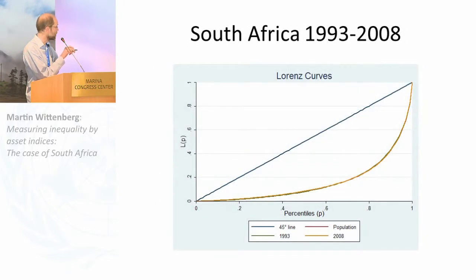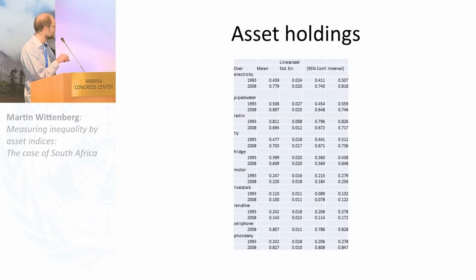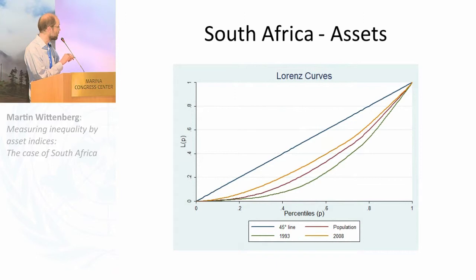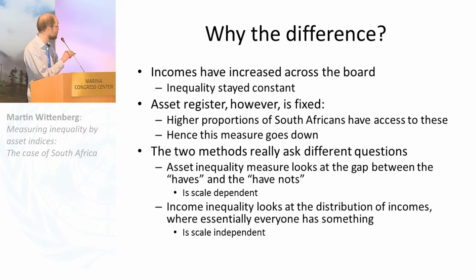This is the story of South African income inequality — we already saw that didn't shift. But if you look at what happens to assets over time, asset holdings across the board have increased. If you now do the Lorenz curves on this asset index, it actually shows a major decrease in inequality. That is basically because the asset register is fixed — so there are really two different questions here. My asset inequality measure looks at the gap between the haves and have-nots, which has decreased on that asset scale, whereas income inequality measures are independent of that very stark have/have-not correspondence.